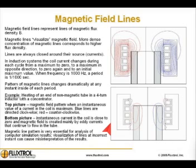These eddy currents continue to flow in the tube. The magnetic line pattern is very essential for analysis of computer simulation results — visualization of lines at an incorrect instant can cause misinterpretation of the results. Let's watch a short video showing line pattern variation during a half period of current.